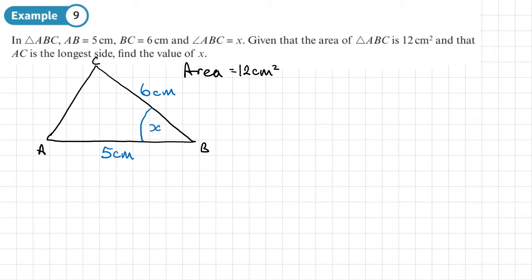So we have two sides. We want to find the angle between them and we know the area. So this is going to be area equals half AB sine C. Now the area we know is 12 centimetres squared. So we can write 12 equals half times A. Now that could be the 5 or the 6. B, which can be the 6 or the 5, times sine of the angle between them, which is X.